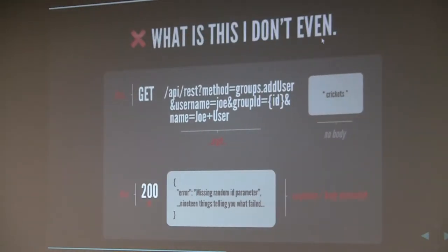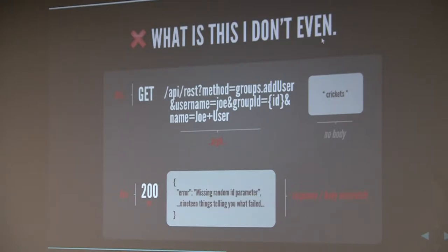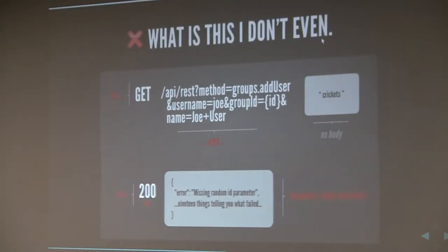Putting a verb on the tail end of your collection is less RESTful, but it's substantially better than the really bad pattern: a GET request that adds users, no purpose for the body because you shoved everything in the URL, and 200 on errors — which means you have to parse the response body to determine if there was an error. If anything, just avoid those constructs.